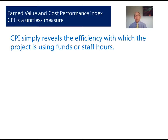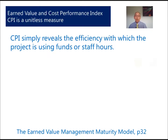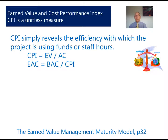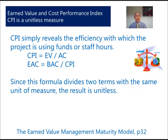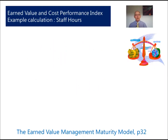The CPI is a metric that gives us the efficiency with which we are using project funds or staff hours. As Ray Stratton identifies in The Earned Value Management Maturity Model, these are metrics: CPI equals earned value divided by actual cost. Because earned value and actual cost can both be expressed in hours, we can use this metric with hours as the unit of measure. Therefore our estimate at complete could be in hours, not necessarily in financial terms.